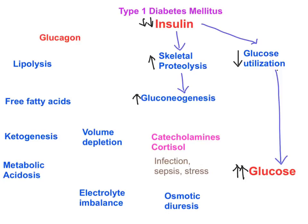There is an increase in gluconeogenesis because substrates are available and because, as you can see, a decrease in insulin leads to increased glucagon levels in type 1 diabetes mellitus patients. This increase in glucagon activates gluconeogenic enzymes — pyruvate carboxylase, phosphoenolpyruvate carboxykinase, fructose-1,6-bisphosphatase, and glucose-6-phosphatase — increasing gluconeogenesis. Amino acids, especially alanine from skeletal muscle proteolysis, feed into this process, and the resulting glucose outpouring from the liver contributes to hyperglycemia.